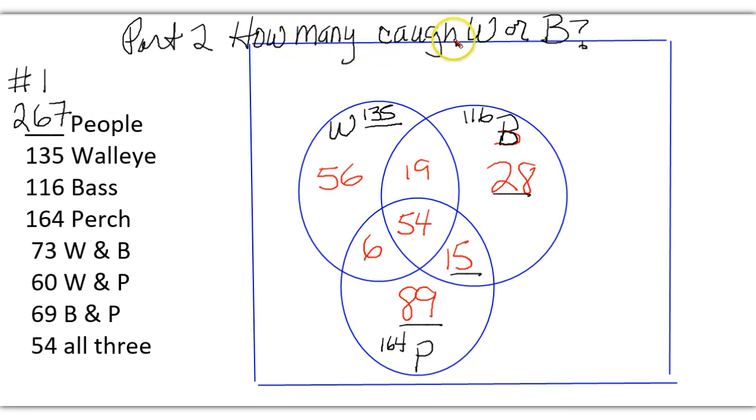How many caught a walleye or a bass? That was part two of this question. We know we have 135, and remember 'or' is a union. We know 116 caught a bass, but we have to subtract the intersection, which was 73. So we end up with 178.